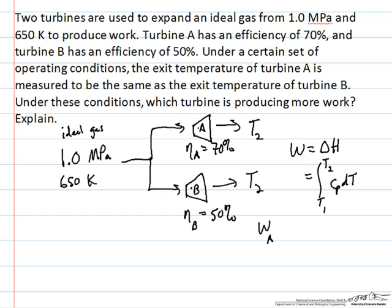And therefore, the work that we get out of turbine A is equal to the work that we get out of turbine B, despite the fact that turbine A is more efficient. And this actually was sufficient for answering the exam problem.